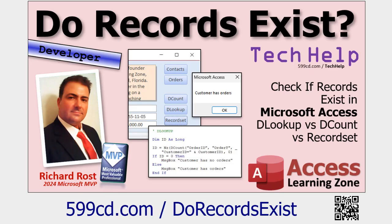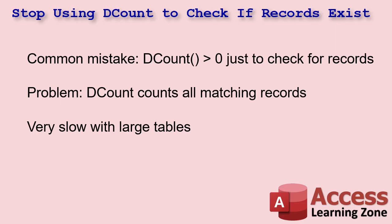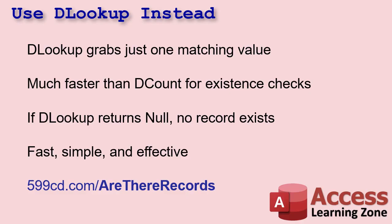In one of my previous videos, I talked about a very important tip: if all you care about is whether a record exists or not, don't use DCOUNT. People make this mistake all the time — I used to make it before I knew about this. Checking a DCOUNT is much, much slower than using DLOOKUP, because DCOUNT is going to run down all of the records, which will be very slow especially with large tables. So if you just want to know whether something exists, use DLOOKUP instead.